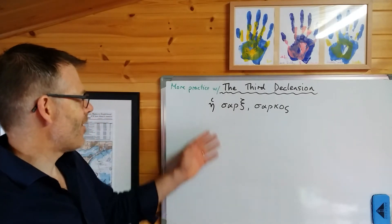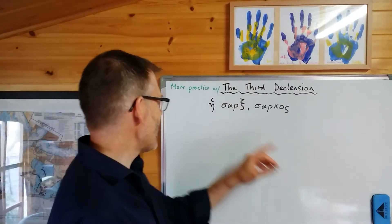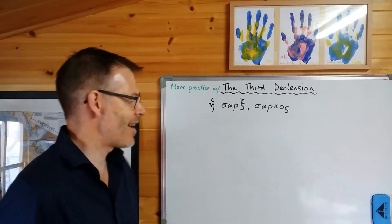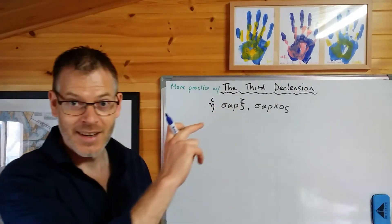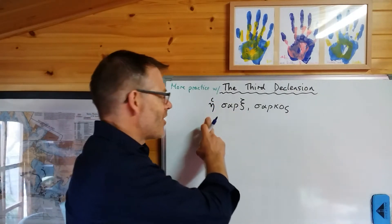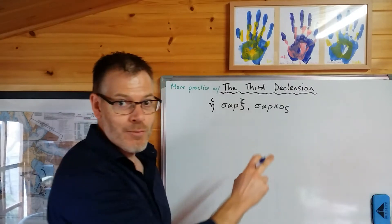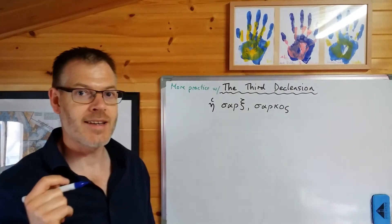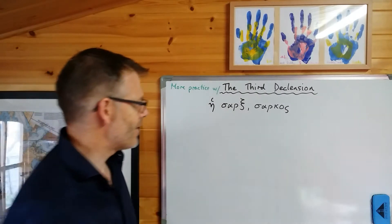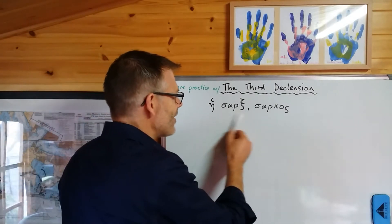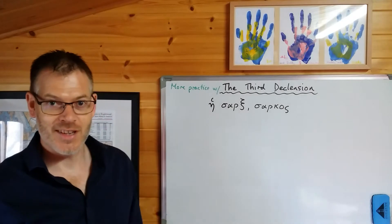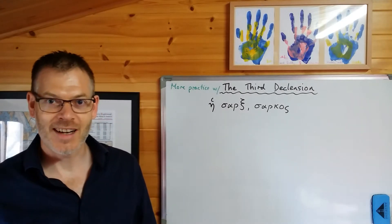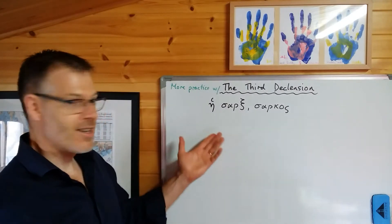Okay, so here goes, here's a third declension noun: hē sarks, sarkos. You know it's a third declension noun because it's listed like this, with the articles telling you the gender, and then two forms of the noun, one of which has the os ending. And so you know that is which case and gender? Well done, it's genitive singular, which means that this one is the nominative singular. So if you're trying to generate the declension, that's how you begin.